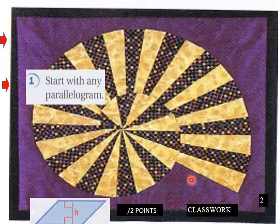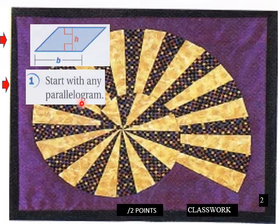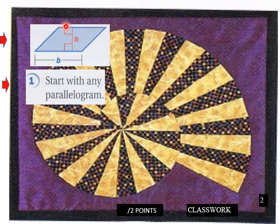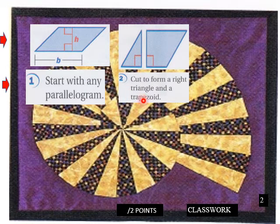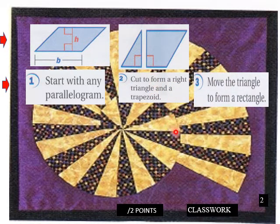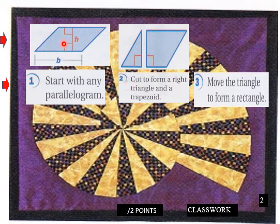And page two on your class work, start with any parallelogram. So here's a parallelogram here. We have this height here perpendicular to these two sides there. Cut to form a right triangle and a trapezoid. So we're going to cut this now. We have one half here and the other half here. We're going to see what this does here. Move the triangle to form a rectangle.